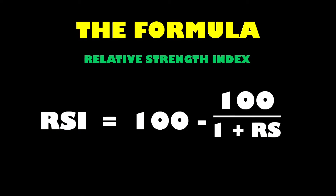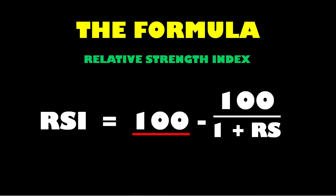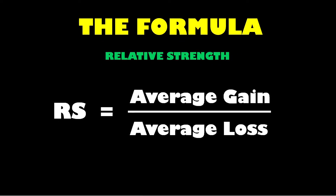Let's check out that formula. In the calculation, the RSI takes the number 100 and divides it by 1 plus the relative strength. It then takes that figure and subtracts it from 100. This hinges on that mystery term — the RS, relative strength. What is relative strength? It's the average gain divided by the average loss.